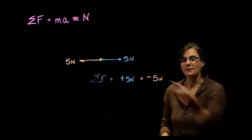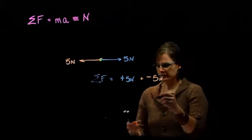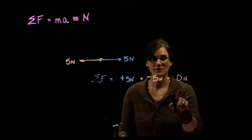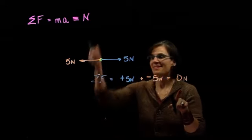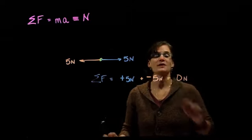I can add them together numerically. Remember, we're going to have to deal with this with vectors. But, I can add them together numerically. So, 5 plus negative 5, well, that, of course, equals 0 Newtons. The net force is equal to 0. That's what's important in Newton's second law.